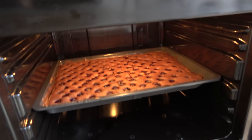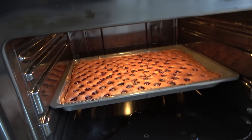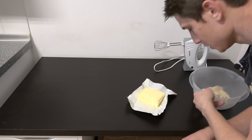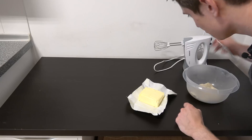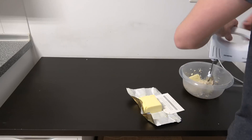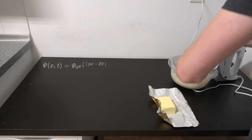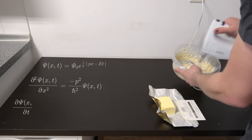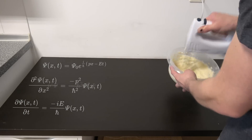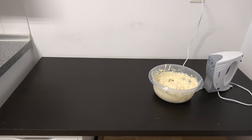The cake is done — it grew nicely and the surface is solid. Take it out of the oven and let it cool for about an hour. For the buttercream, mix 200 grams of butter into the cooled pudding one portion at a time using a mixer until it becomes nice and fluffy. While the buttercream mixes, consider differentiating our wave function ψ twice with respect to x and once with respect to time. This gives two equations: one solved for p²ψ and one for Eψ.